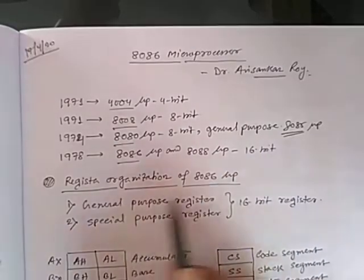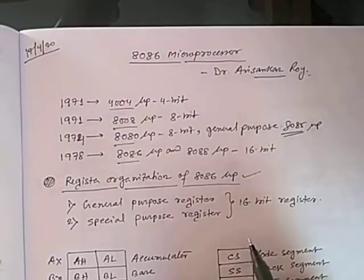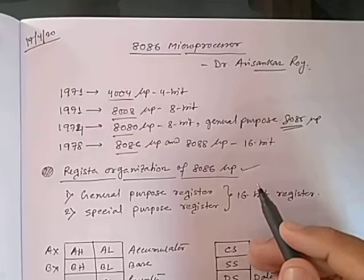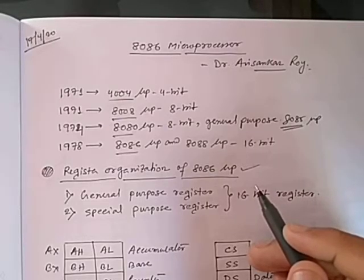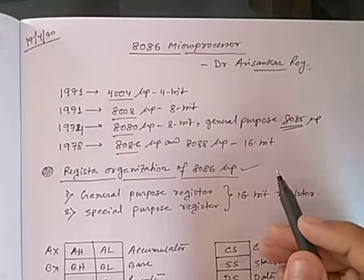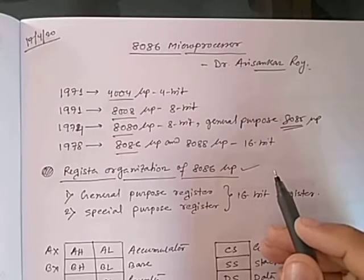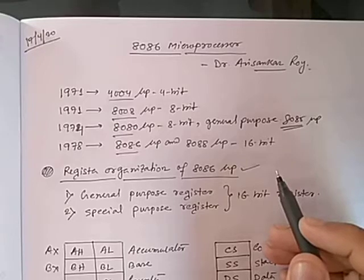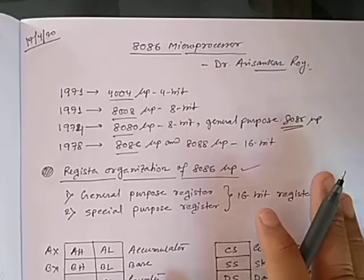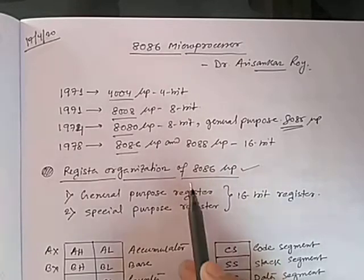Now we will discuss the register organization of the 8086 microprocessor. In the 8085 microprocessor, there are 8-bit registers — accumulator, B, C, D, E, H, L — and 16-bit registers: stack pointer and program counter. Registers B, C or D, E or H, L can be used as register pairs. The stack pointer is related to the stack, and the program counter always holds the address of the next instruction to be executed.